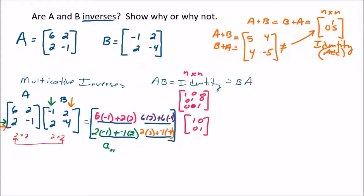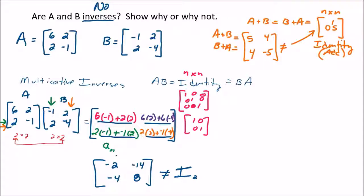We can already see this is not going to be the identity matrix. Computing: the first entry is negative 6 plus 4; the second is 12 plus negative 24, which is negative 14; then negative 2 plus negative 2; and 4 plus 4. That is not the identity matrix — we sometimes write it as I with a subscript 2 to signify the 2×2 identity matrix. So these are not multiplicative inverses of each other. We've shown why: multiplying A times B does not equal the identity matrix. If it had, we'd still need to check B times A as well — both A times B and B times A would have to equal the 2×2 identity matrix.